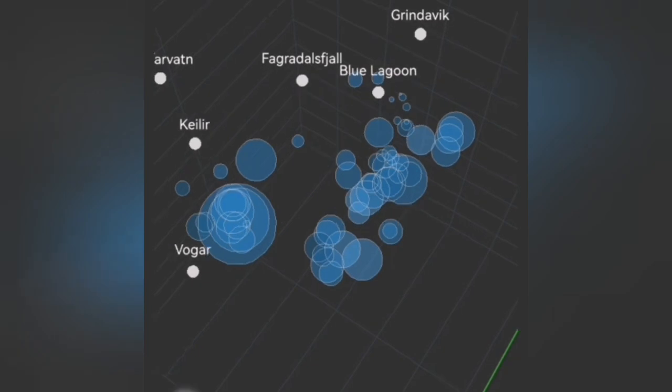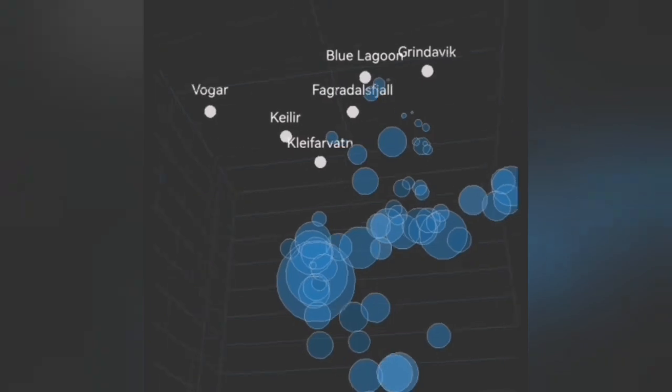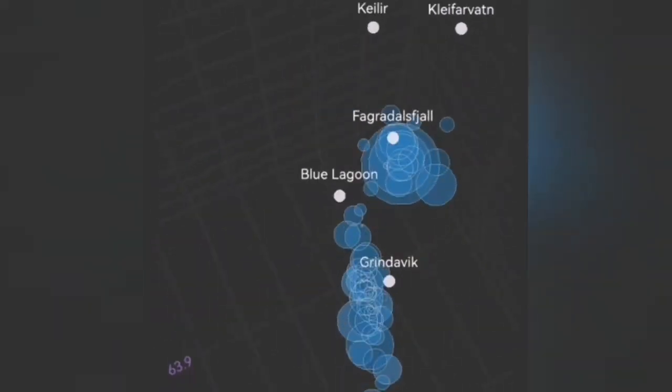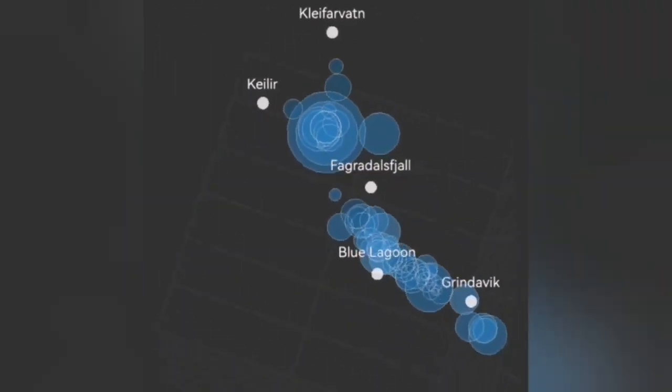The latest seismogram depth of the earthquake shows that we have at the depth of 5 km, and now reducing, some earthquake activity. This is Grindavik, you can see that.